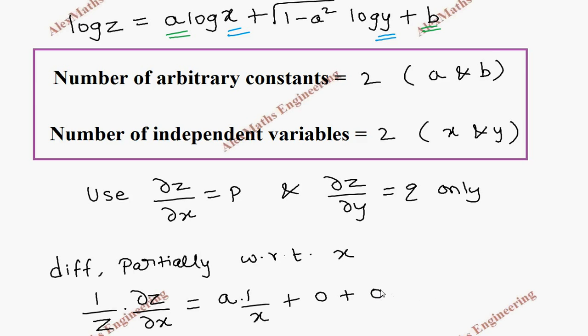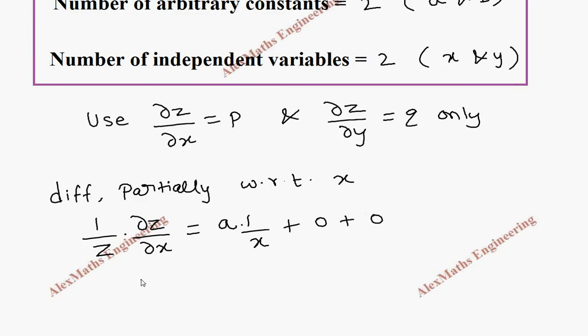And remaining terms are treated as a constant. So it is 0. Because when we do partial derivative with respect to x, y is treated as a constant. So this is 1/z into p equal to a/x. So we got an expression. Let's keep this separately.